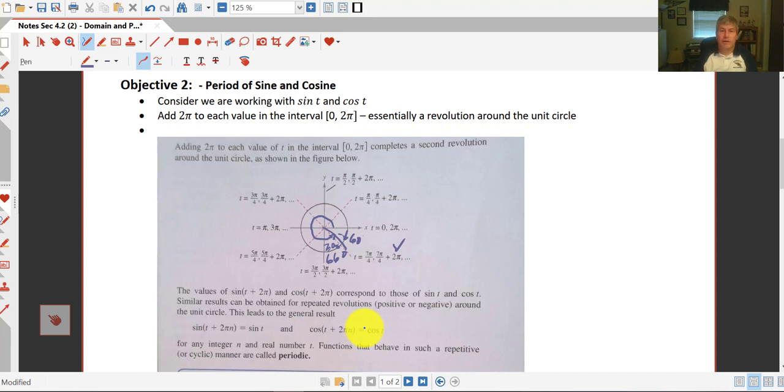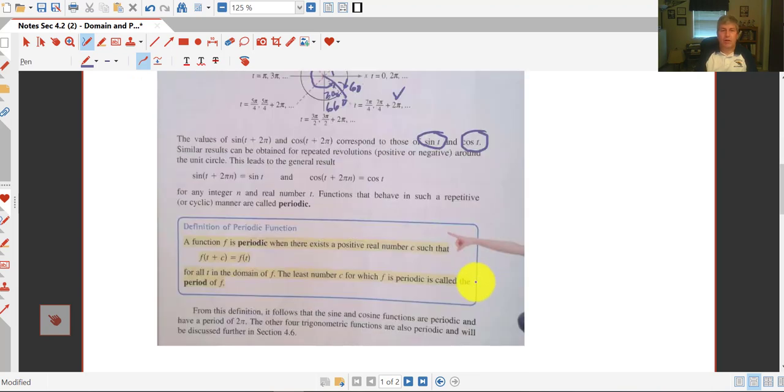They repeat every 2 pi. So the value of sine of t plus 2 pi and cosine of t plus 2 pi correspond to just our base sine of t and cosine of t. So that leads to the general result, the sine of t plus 2 pi n, and that's just the number of revolutions, equals the sine of t. And the cosine of t plus 2 pi times n equals the cosine of t.